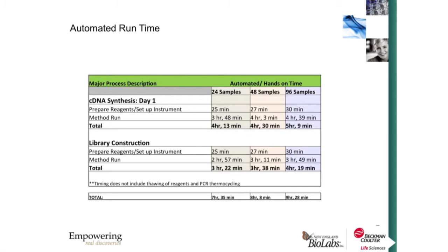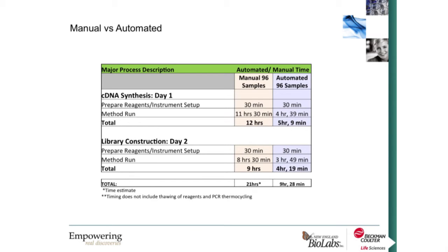For the cDNA synthesis method, for up to 96 samples, we were able to complete the entire workflow in 5 hours and 9 minutes. For the library construction workflow, 4 hours and 19 minutes, for a total of 9 hours and 28 minutes for 96 individually barcoded strand-specific RNA-seq libraries. Those numbers are substantially less than doing 96 manually, which we estimate will take up to 21 hours. So we're offering substantial time savings with this automated method.